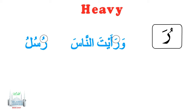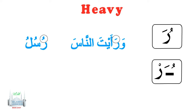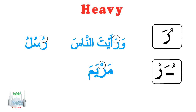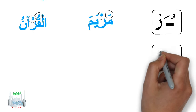If the Ra has a sukoon on it, we look at the previous letter. If the letter before the Ra has a Fathah or a Dhamma, it is pronounced heavy. This example has a sukoon on the Ra; the letter before it has a Fathah. It will read as مَرْيَم with a heavy Ra. Here it will read as الْقُرْآن.